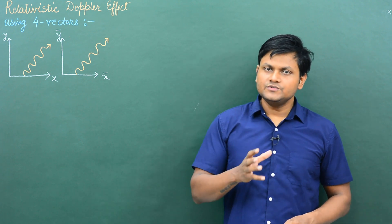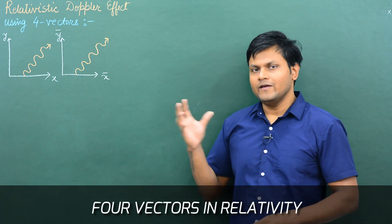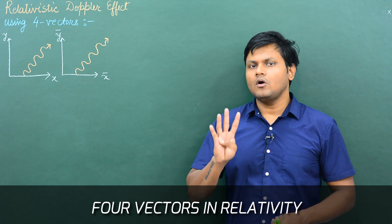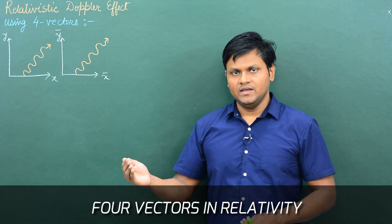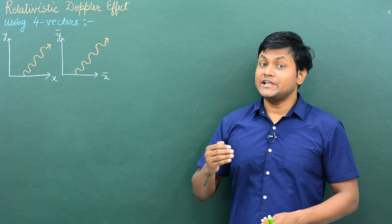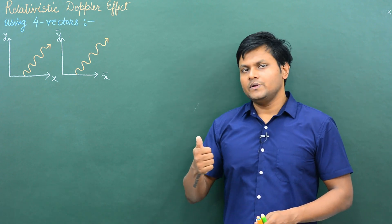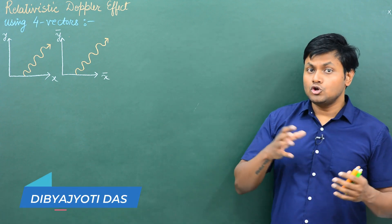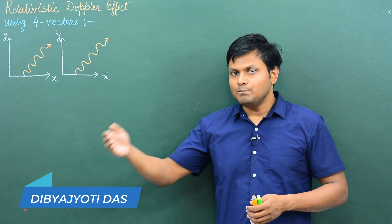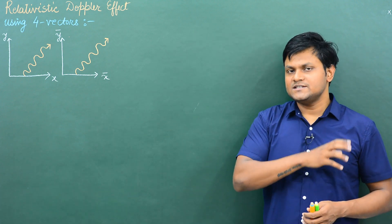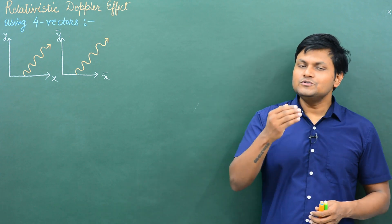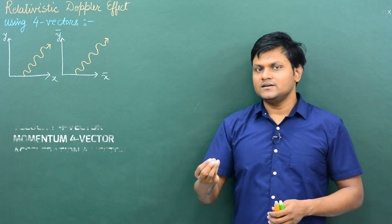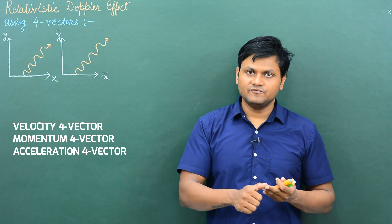In my last lecture, I introduced the concept of four vectors in relativity. Four vectors are physical quantities that have four components in space-time: three components associated with the three directions in space — x, y, z — and one component associated with time. So these are physical quantities represented not just in three-dimensional space, but in four-dimensional space-time. I also obtained some very common four vectors like the velocity four vector, momentum four vector, and acceleration four vector.